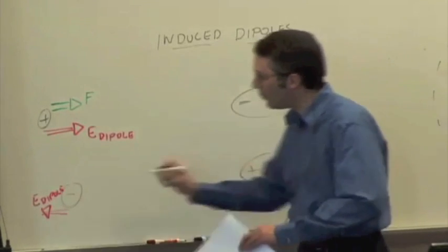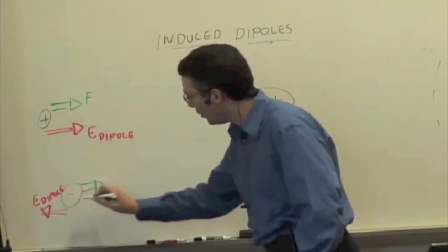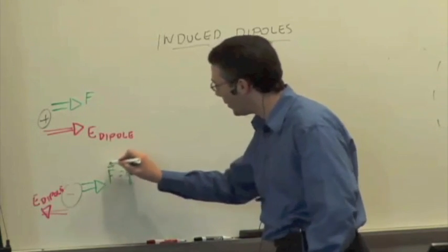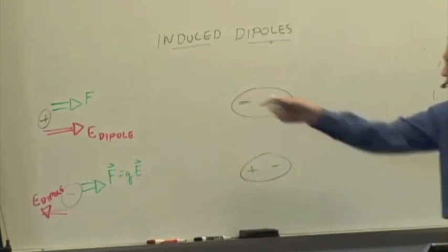But because we're saying F is equal to Q times E, and Q is now negative, the force is going to be in the opposite direction. So we had an attraction.